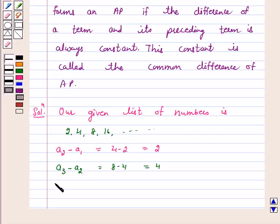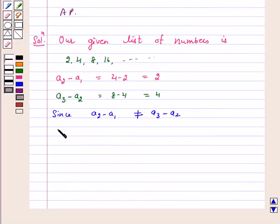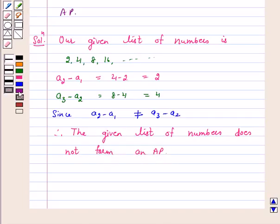Since a2 minus a1 is not equal to a3 minus a2, therefore the given list of numbers does not form an AP. Hence the answer for this question is no, the given list of numbers does not form an AP. I hope the question is clear to you. Bye and take care.